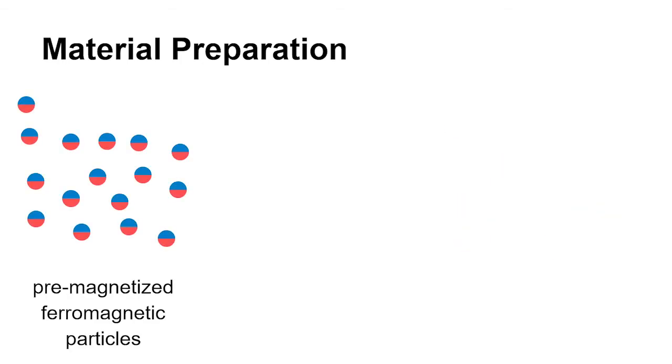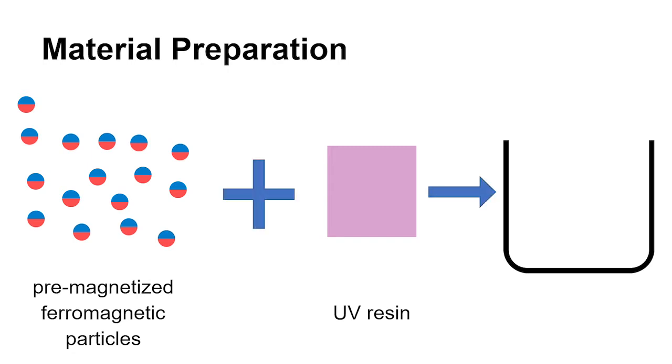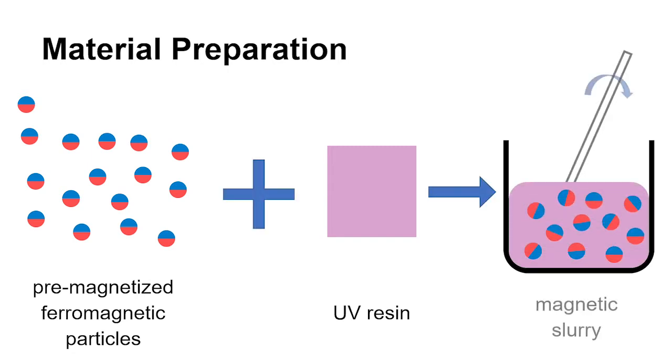After being magnetized, the magnetic particles are mixed with UV resin in a one-to-one mass ratio. Then the mixture is stirred sufficiently to form a homogeneous magnetic slurry. The magnetic slurry must be kept away from light to avoid unintended curing.